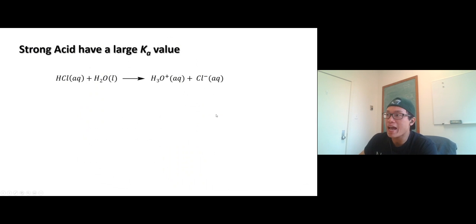So strong acids, on the other hand, have a large Ka value. Let's take a look. So 10 to the seventh. That's 10 million times favor the product over the reactant.